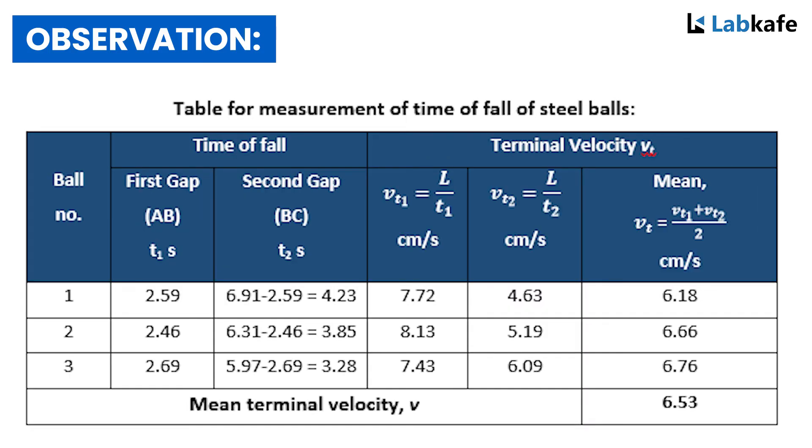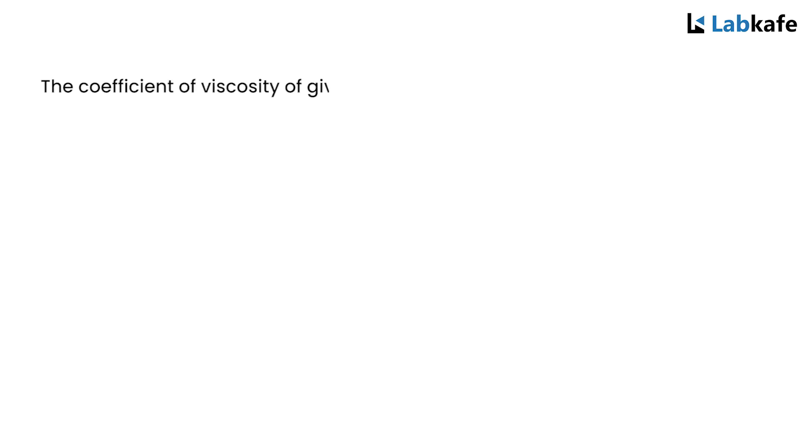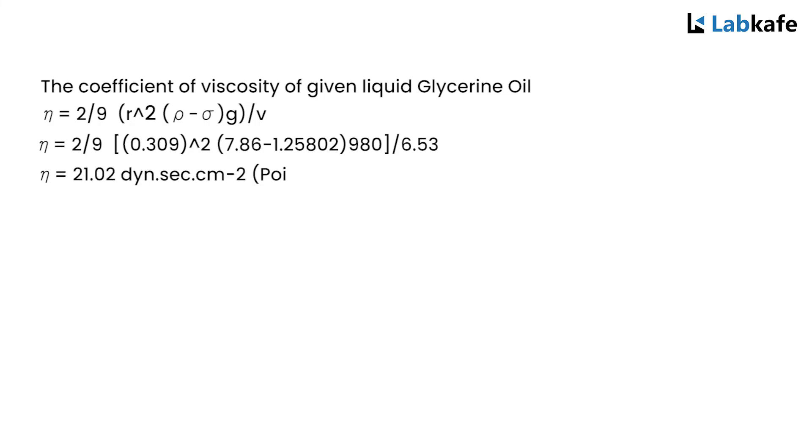The mean terminal velocity V is 6.53. So the coefficient of viscosity of glycerin is given by eta equals 2/9 R squared times (rho minus sigma) times G by V, equals 2/9 times 0.309 squared times (7.8 minus 1.2580) times 980 by 6.53, which is 21.02 dyne second per centimeter square. We can also say poise.